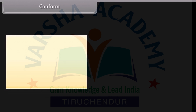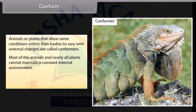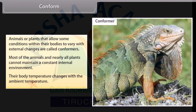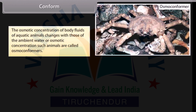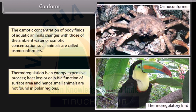Conform: Animals or plants that allow some conditions within their bodies to vary with external changes are called conformers. Most animals and nearly all plants cannot maintain a constant internal environment — their body temperature changes with the ambient temperature. The osmotic concentration of body fluids of aquatic animals changes with that of the ambient water; such animals are called osmoconformers. Thermoregulation is an energy-expensive process, and since heat loss or gain is a function of surface area, small animals are not found in polar regions.